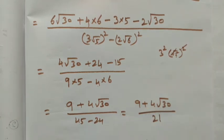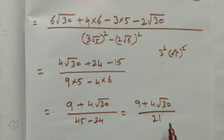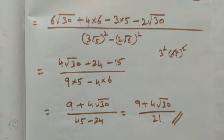So this is equal to (9 + 4√30) / 21. It cannot be reduced further to the lowest form. The denominator has become a rational number. So this is the answer.